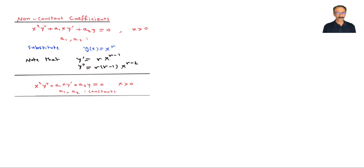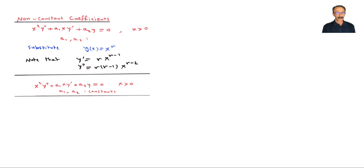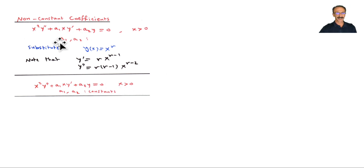For a third derivative you would bring down r-2 and the exponent becomes r-3. This is the general form we are looking at with non-constant coefficients, because we have x² and x here, while a₁ and a₂ are constants.